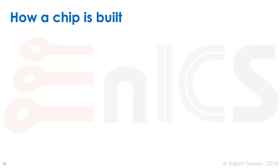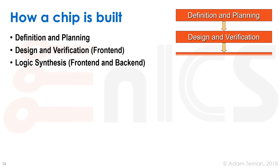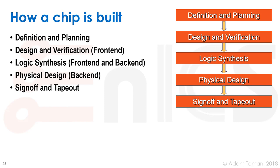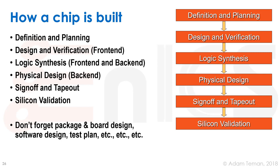Now we'll move to the chip design flow. Here's a basic overview: we start with definition and planning, move into front-end design (design and verification), then transition to back-end design starting with logic synthesis and going through physical implementation. Finally we do sign-off, tape out to the foundry for fabrication, and then silicon validation. We can't forget parallel activities like package and board design, software design, and test planning.